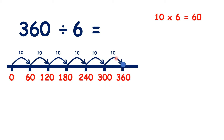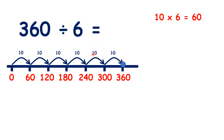So because we counted 6 steps of 10 times 6, we really counted 60 steps. So 360 divided by 6 is 60.